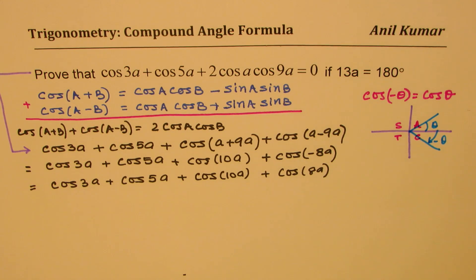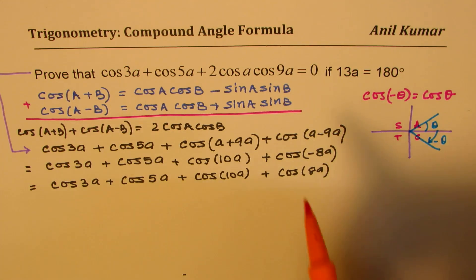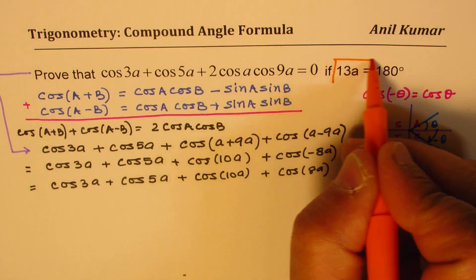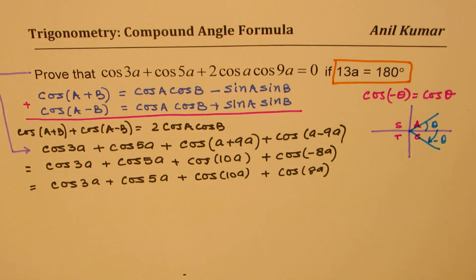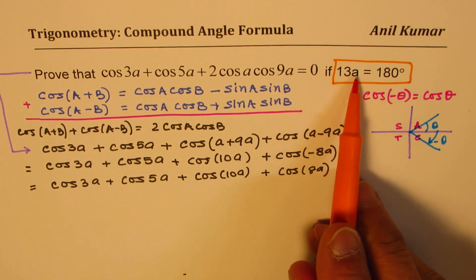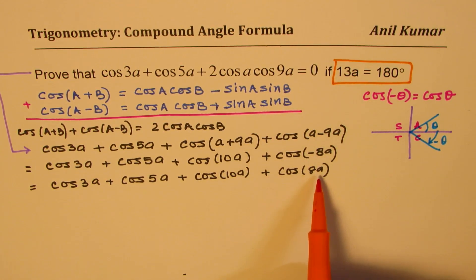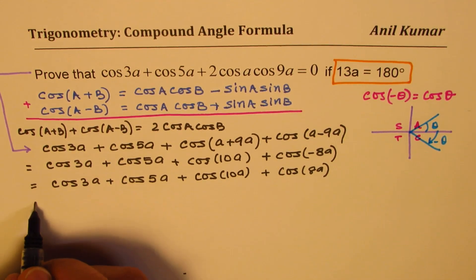We are also given a condition here which says 13a is equal to 180 degrees. So 10a could be written as 13a minus 3a and 8a could be written as 13a minus 5a. So we are going to rewrite these expressions.